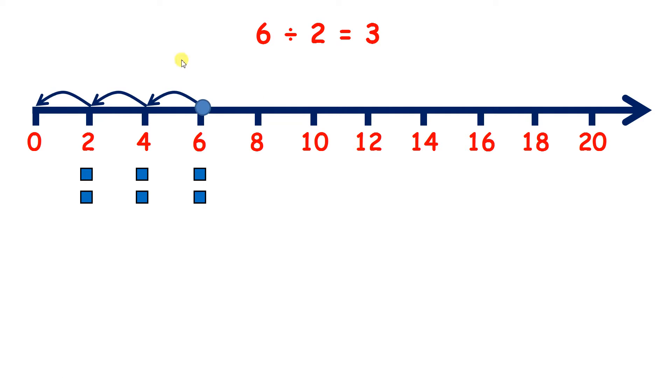6 divided by 2 is 3, because if I have 6, I can take away 2 three times to get to 0.